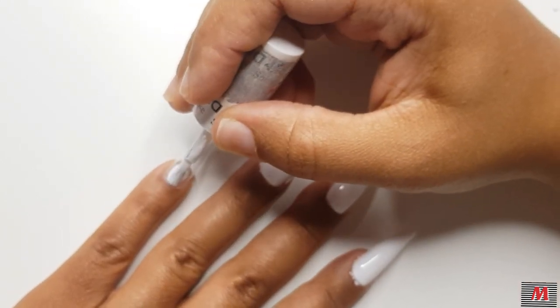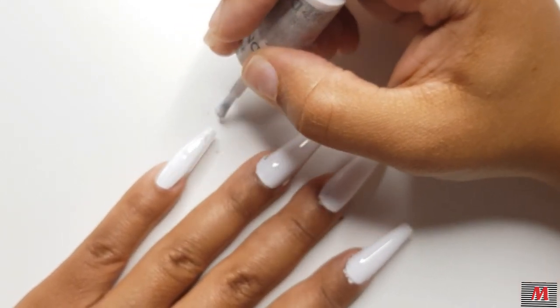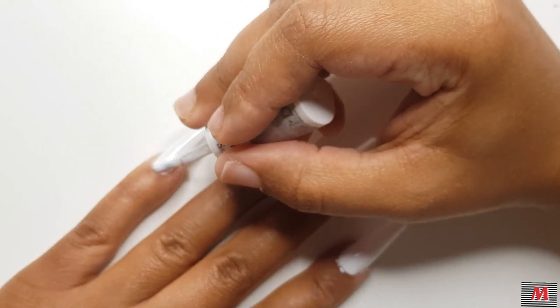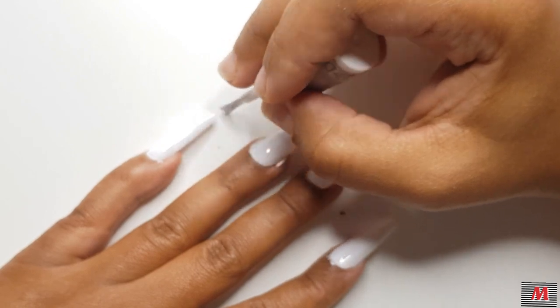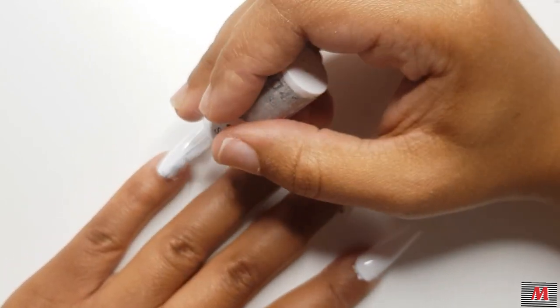I'm going to cure it in my sun UV lamp for 60 seconds and just let that cure before I go on to the cow print design that we're going to do on these nails.